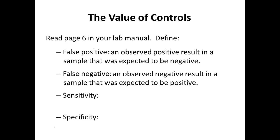What are you testing for in a pregnancy test? Human chorionic growth hormone, which is usually only produced when someone is pregnant. It travels through your bloodstream, and excess hormones are filtered out into your urine — that's why you can test urine. But you have to be far enough along in pregnancy that you're producing enough that it spills over into your urine at a detectable level.